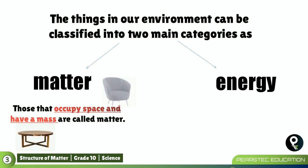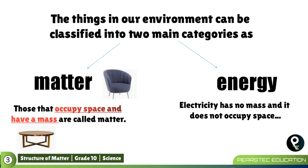Now, the table or the chair is called as a matter because it is occupying the space and also it got a mass. Now, when we are talking about electricity, electricity has no mass and it does not occupy space. That is definitely called as electricity.